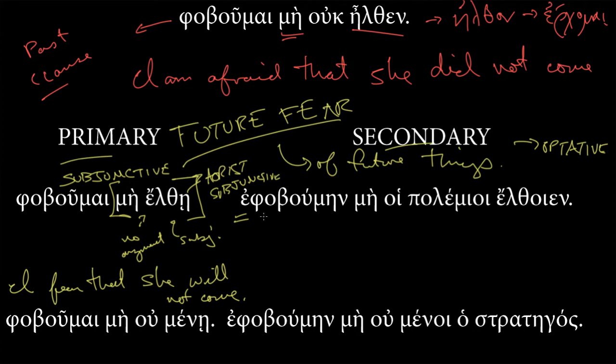So, this is what we would expect. So, I fear that she, and this is, again, a future fear, will not come. Perfect. And we know it's future because we're using the subjunctive. We're in this primary sequence. Now, note that this is an aorist participle, or not participle, sorry, aorist principal part. It's an aorist subjunctive. That's just saying that it's simple in aspect. It's one time.